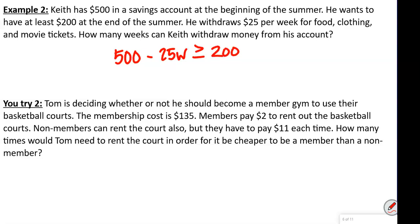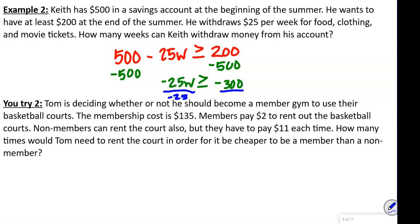We subtract $500 from both sides, giving us negative 25W is greater than or equal to negative 300. Remember, when we divide or multiply by a negative number, we must flip the sign. So W is now less than or equal to 12, because negative 25 goes into negative 300 twelve times.